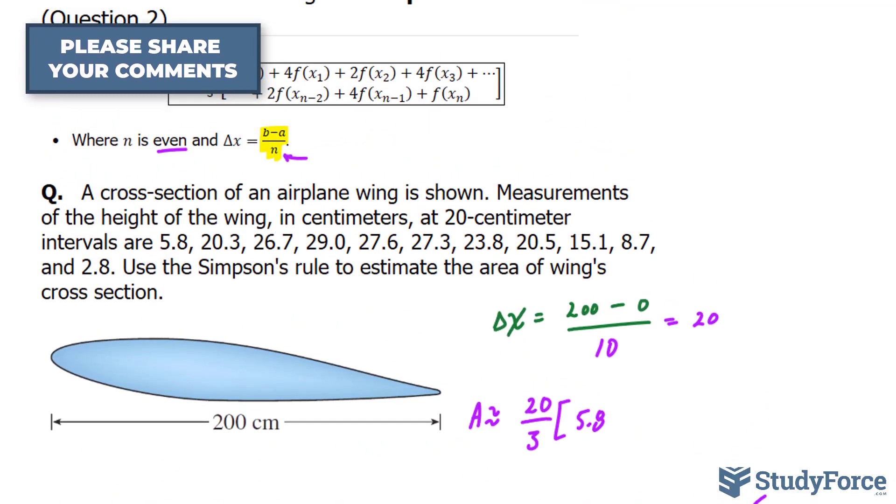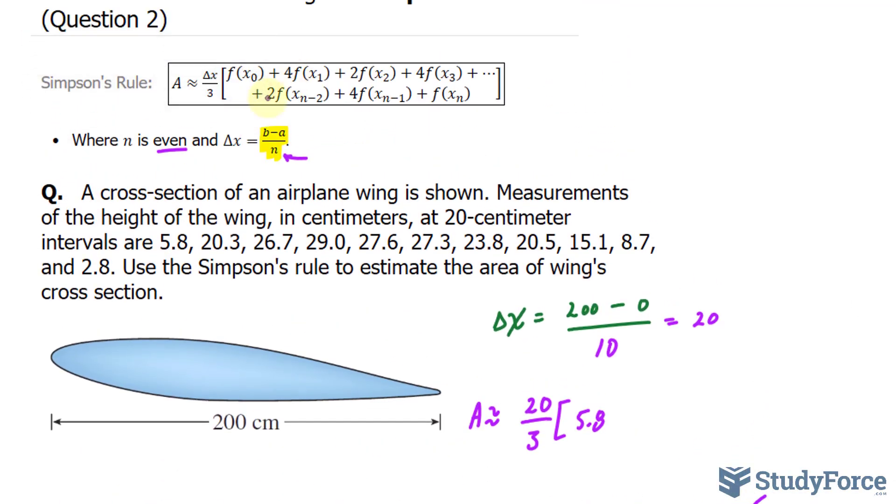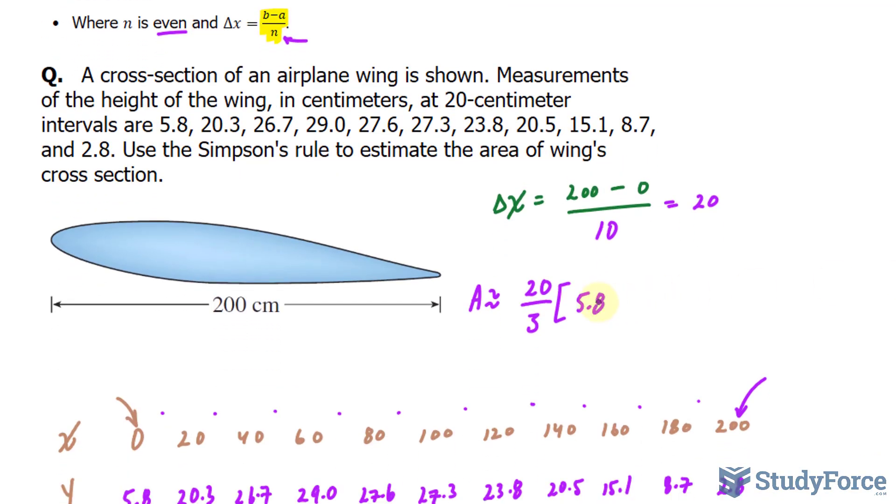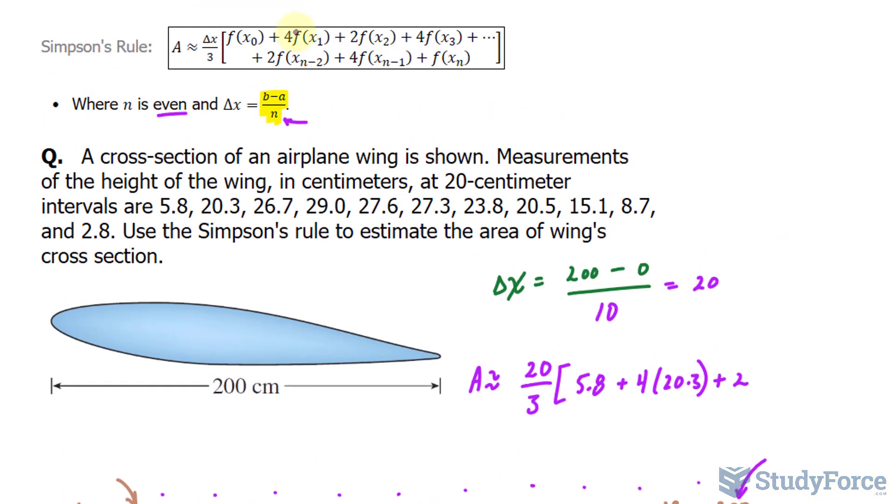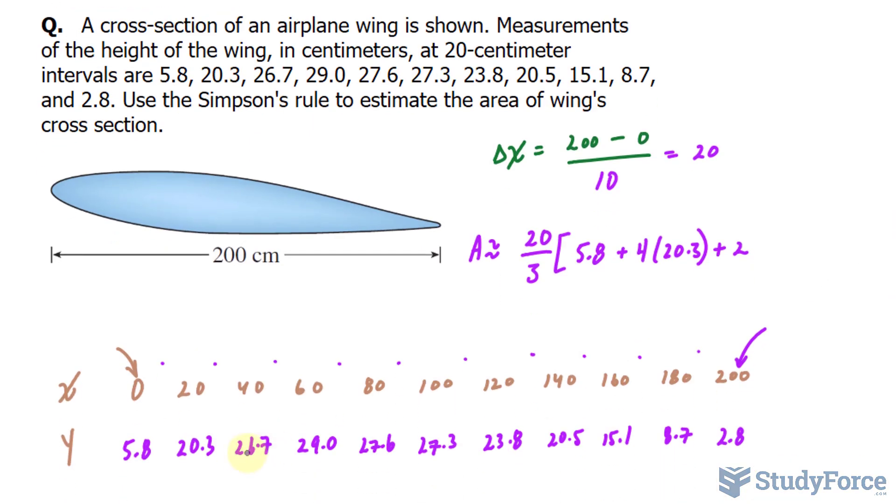For the next term within the brackets, we have to multiply the Y observation by 4. So 5.8 plus 4 times 20.3. The next one is 2 times. Notice that it alternates between 4 and 2 all the way until it reaches the final observation, which is 1.